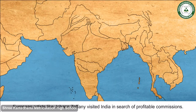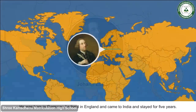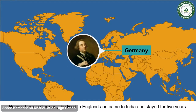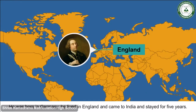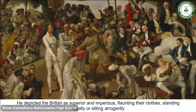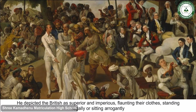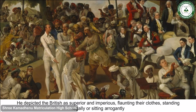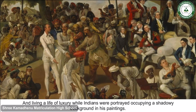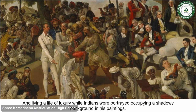European artists like Johan Zofani visited India in search of profitable commissions. He was born in Germany, lived in England, and came to India where he stayed for five years. He depicted the British as superior and imperious, flaunting their clothes, standing regally or sitting arrogantly and living a life of luxury, while Indians were portrayed occupying a shadowy background in his paintings.